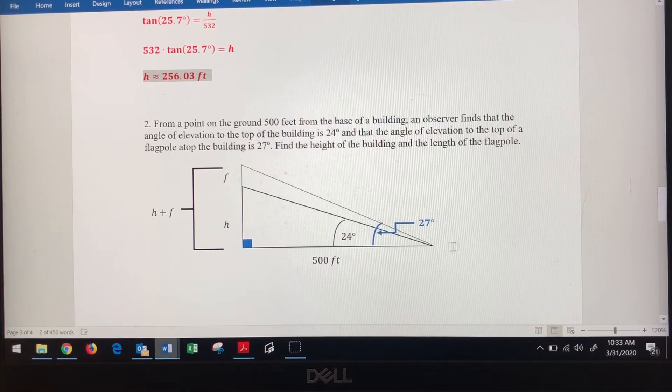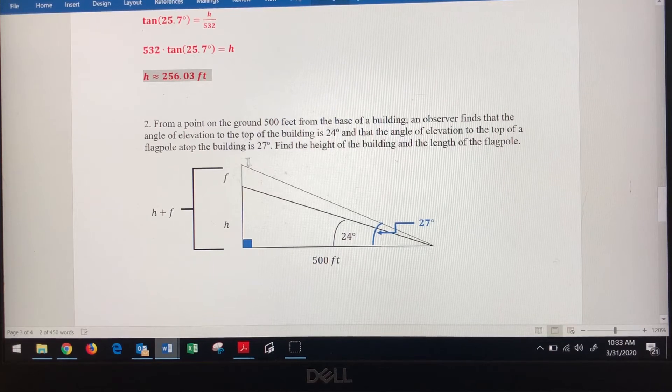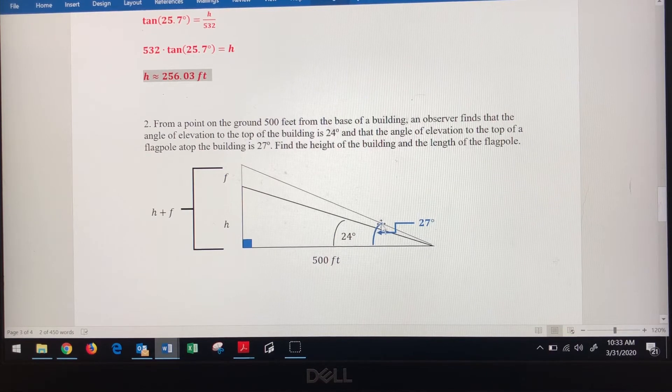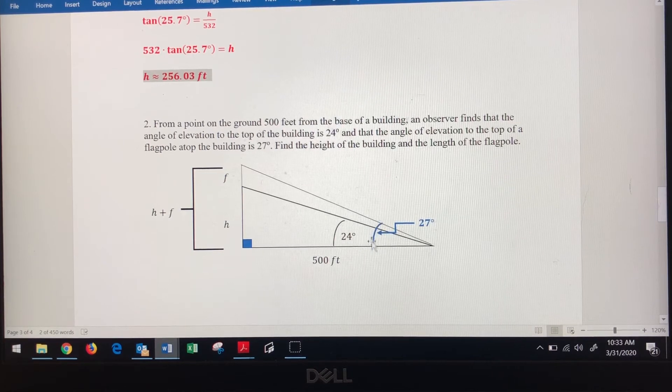The angle of elevation from the observer to the top of the flagpole is 27 degrees. So that's this whole angle here. Remember, the angle of elevation goes from the horizontal. So this is only 24 degrees. This is 3 degrees more, 27 degrees.